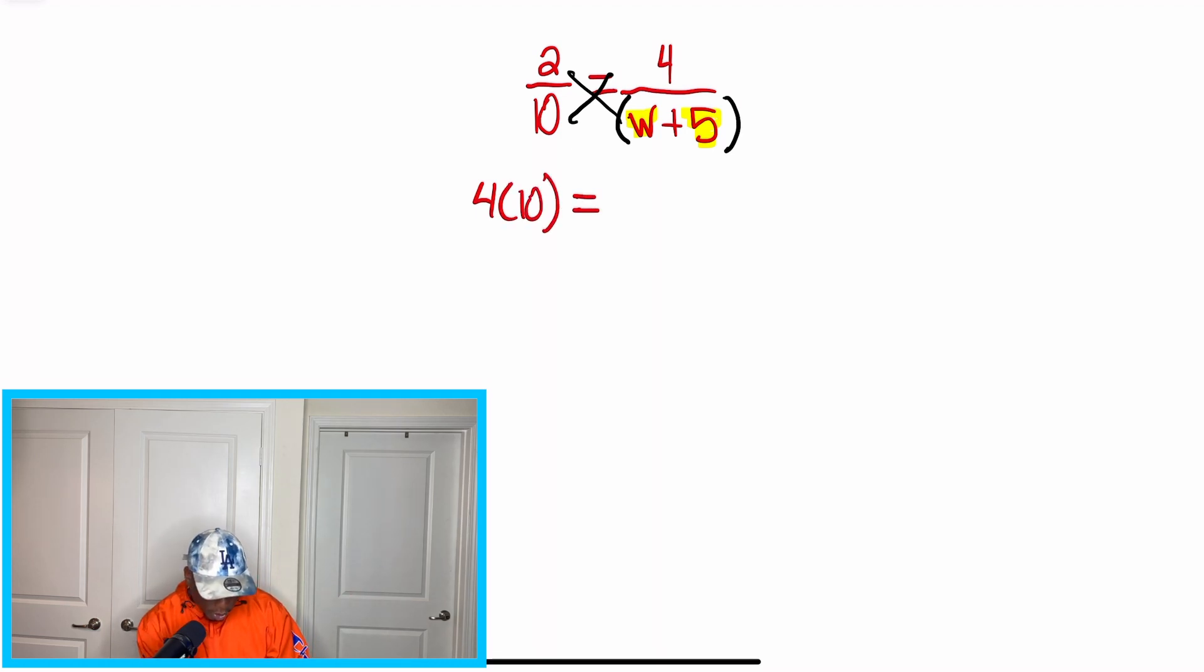So we're going to set our equation up. On one side, we have 4 times 10 is equal to, then on the other side, we have 2, and in parentheses, we have W plus 5. So we did step one. We drew our X to cross multiply. Now, step two, we're setting up the equation. But when we have more than one term, that means we're going to distribute. Please try to remember that. This is such a big tip I give to students, and it makes a difference.